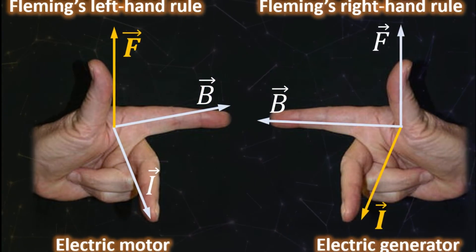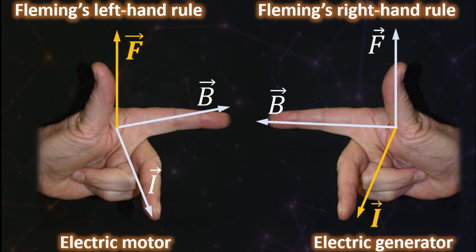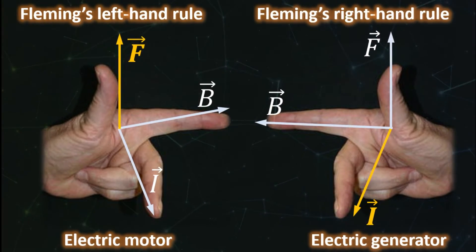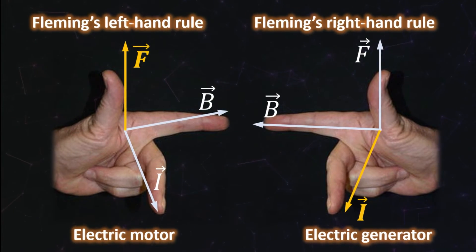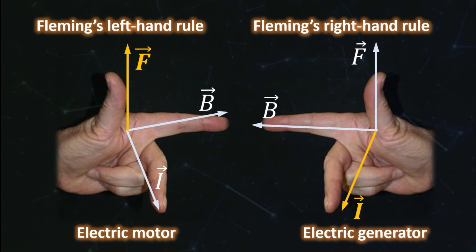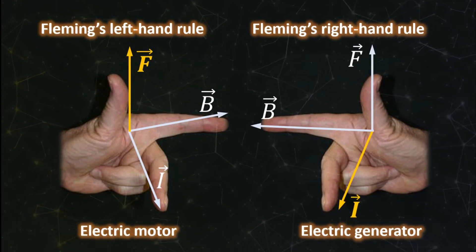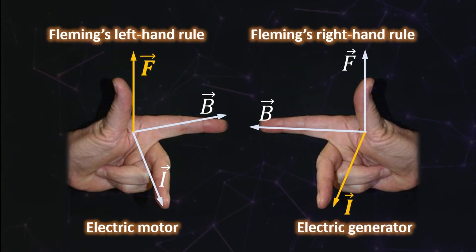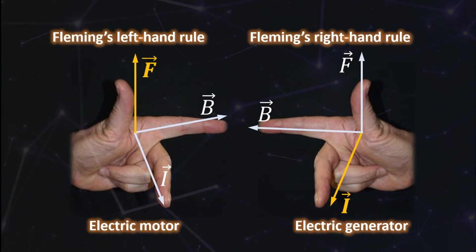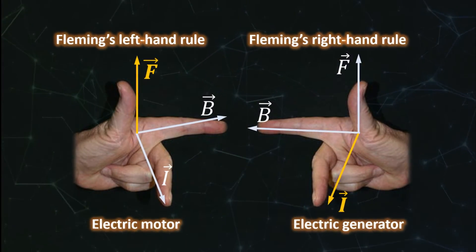The English scientist John Ambrose Fleming devised a simple rule which allows one to determine the directionality of the current flow due to the presence of a magnetic field and physical motion in an electric generator. This is known as the Fleming right hand rule. An analogous left hand rule can also be devised to establish the directionality of the physical motion due to the presence of the magnetic field and electric current.